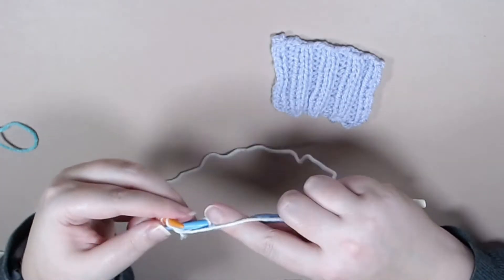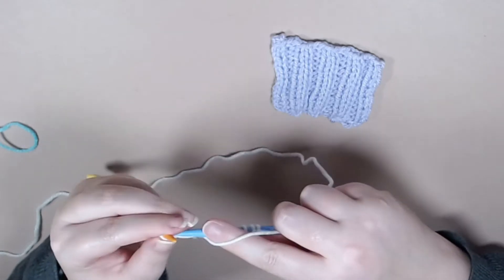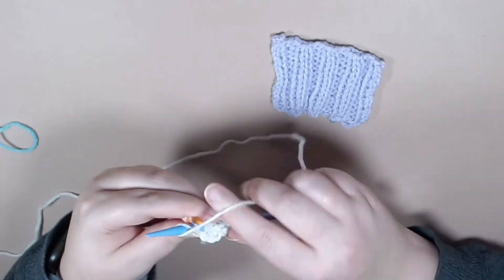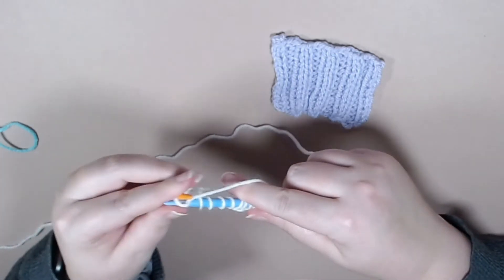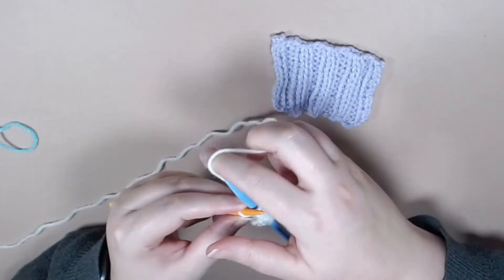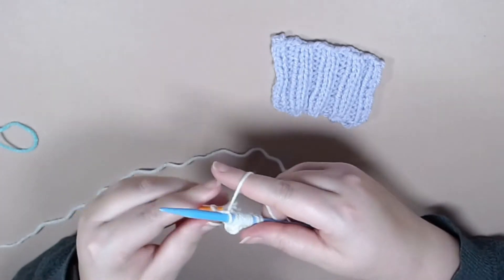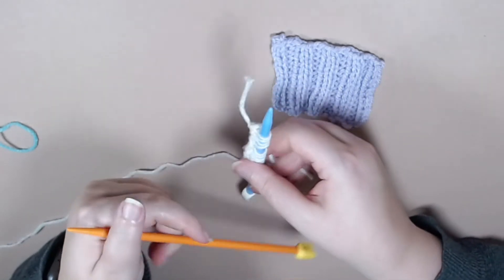So again, it's purling 2, and knitting 2. So that is row 1.